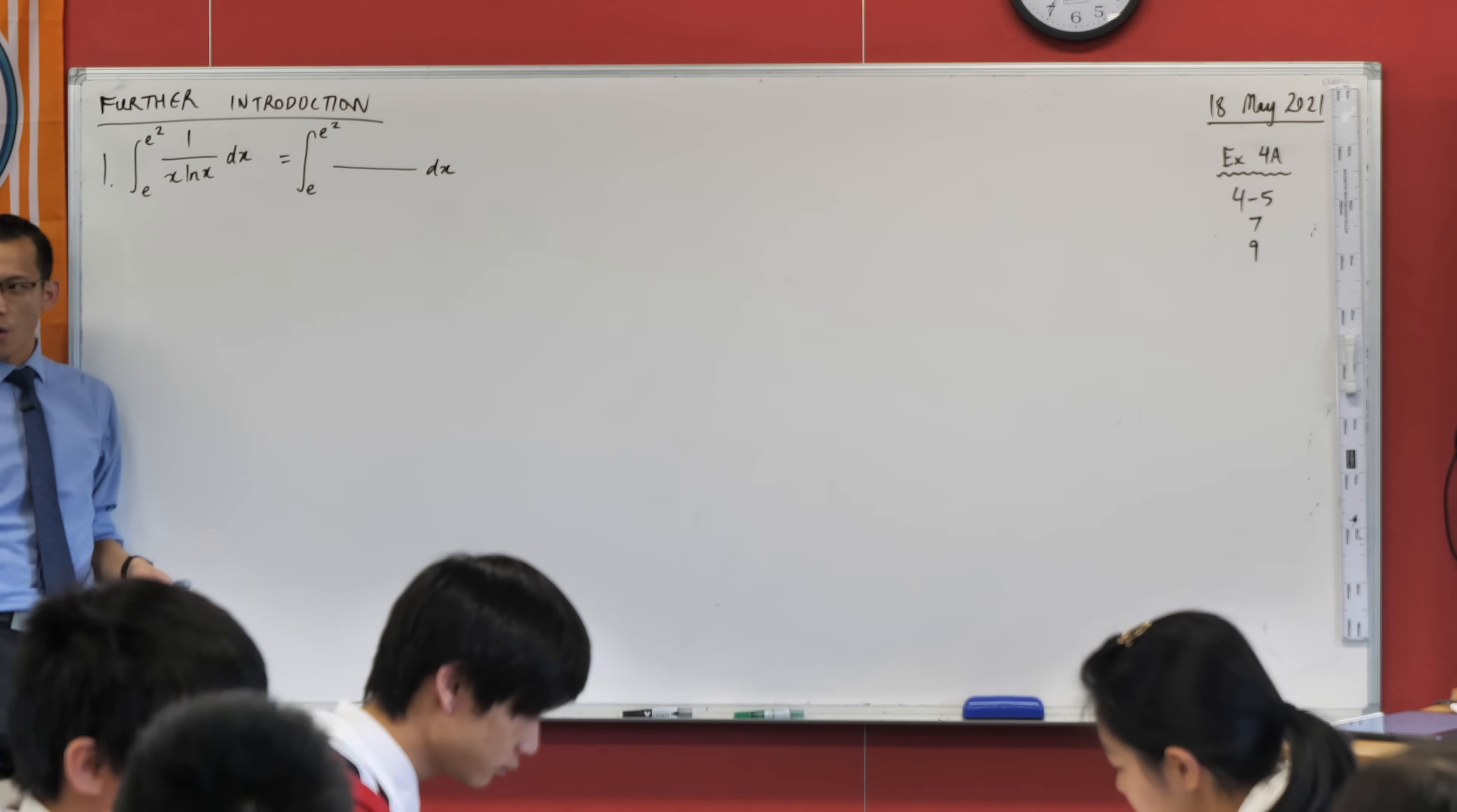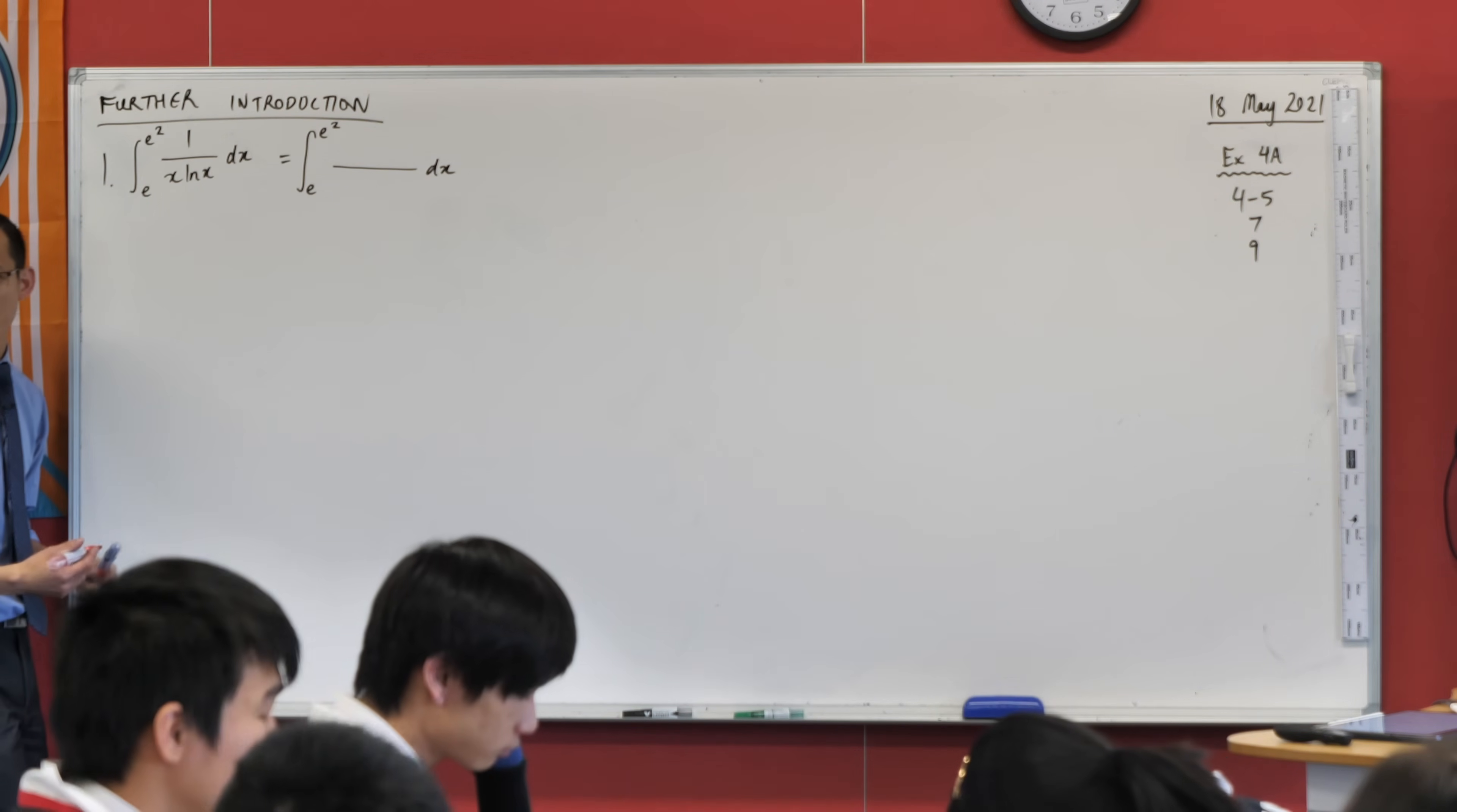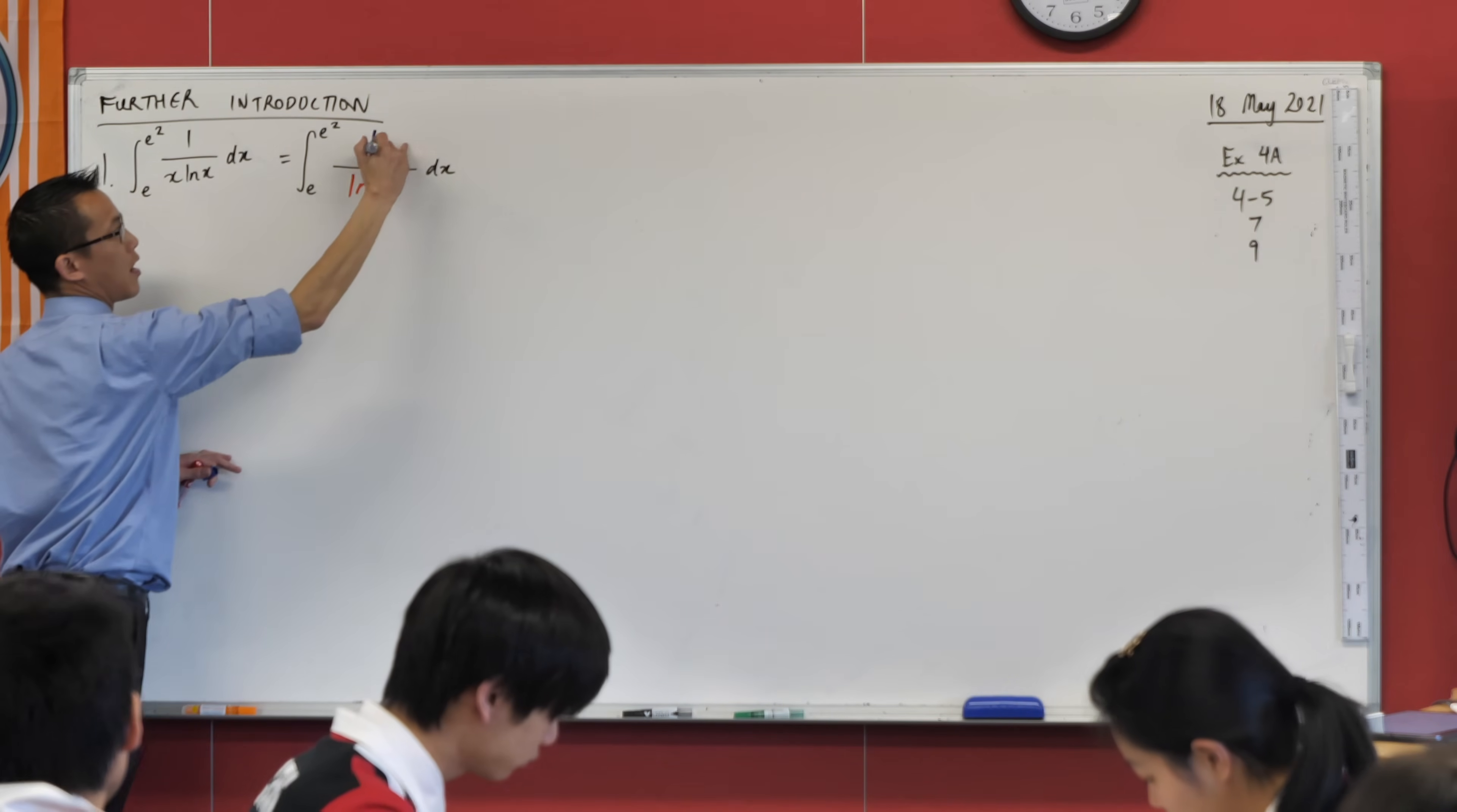Literally the only thing you can go to from an advanced point of view is a log. So I'm looking for some kind of f dash on f. The last time I checked, 1 was not the derivative of x log x. But I can fairly effortlessly turn this into an f dash on f situation. What might be the useful f(x) to choose?